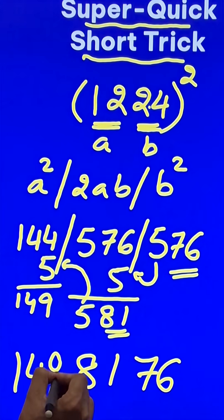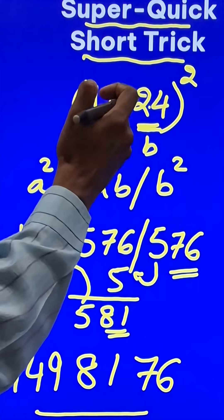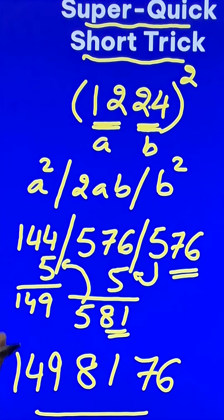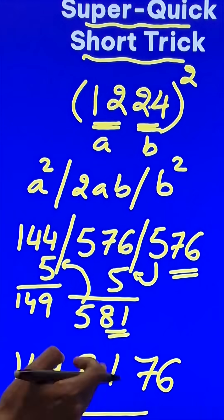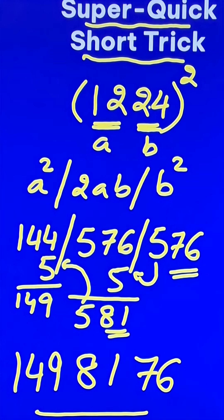Just write 149 here and pick up the calculators. 1224 times 1224 — is it 1498176? You are going to be surprised by the accuracy of the result.